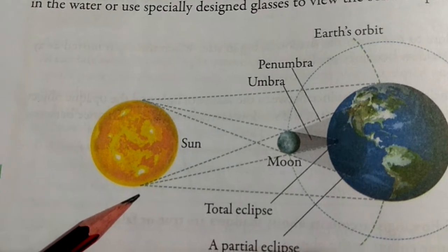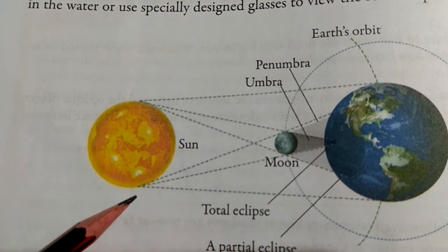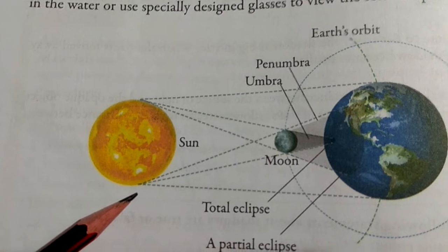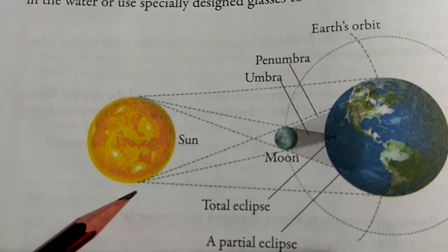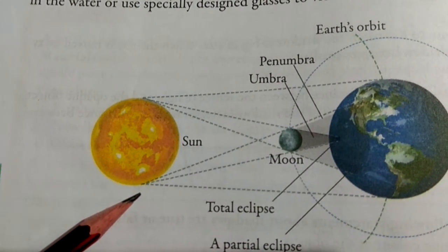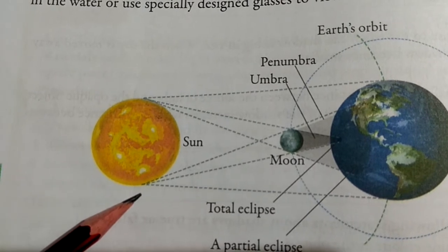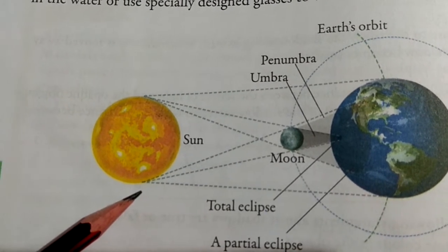When the moon hides the sun completely, it is called total solar eclipse. But when some part of the sun is visible from the earth, it is called a partial solar eclipse.